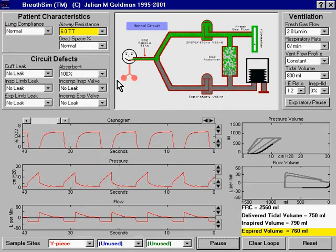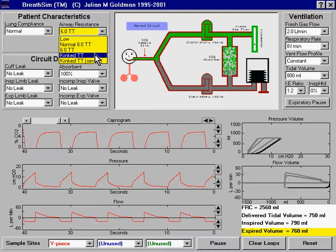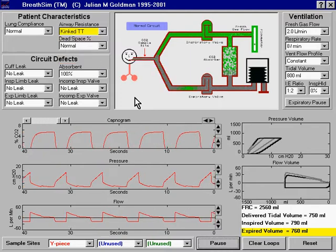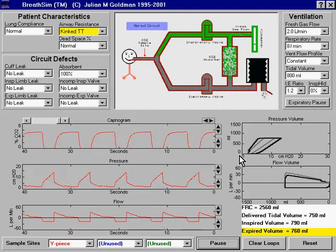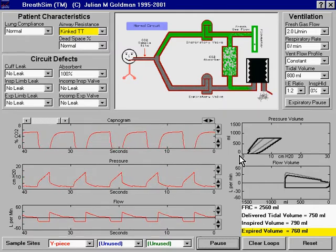If we increase airway resistance further, the change in the pressure volume loop will become even more pronounced. It develops what I call an anvil shape as airway resistance increases further.